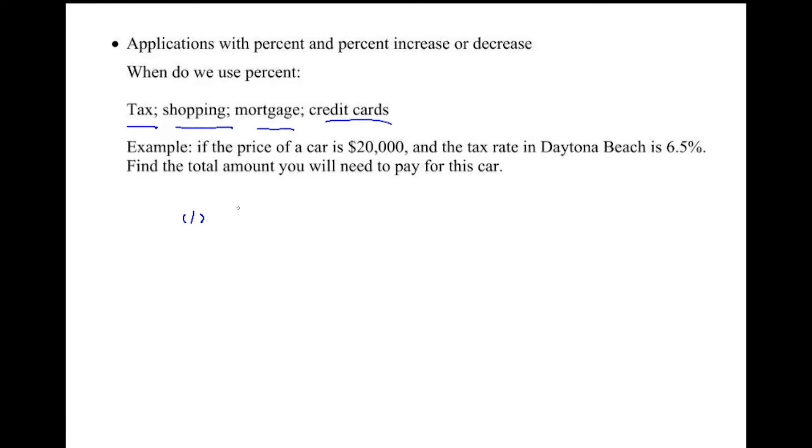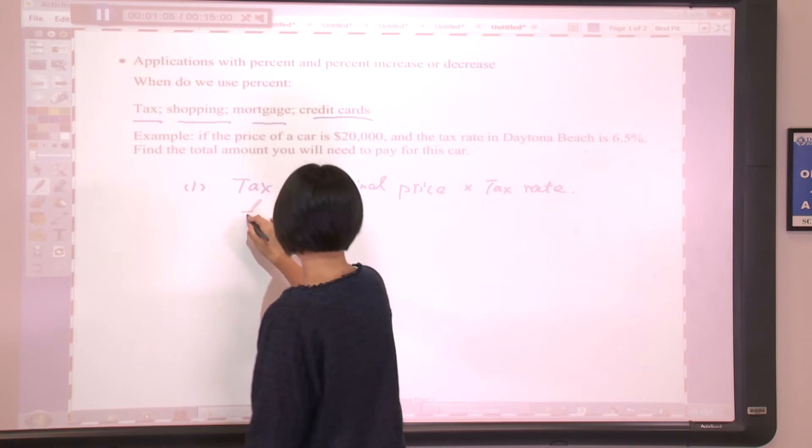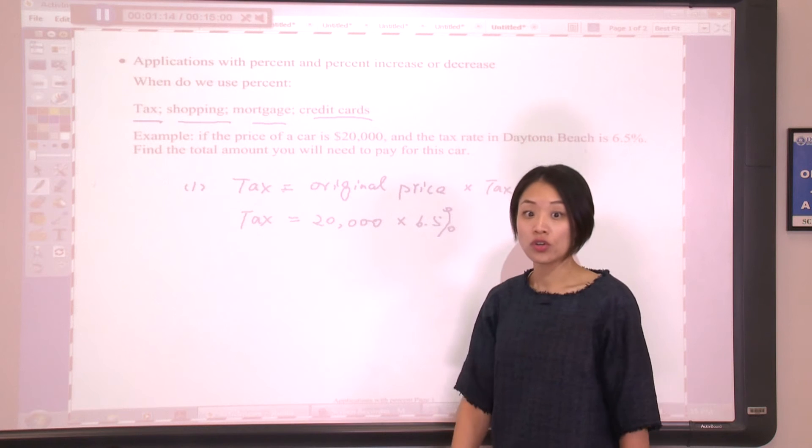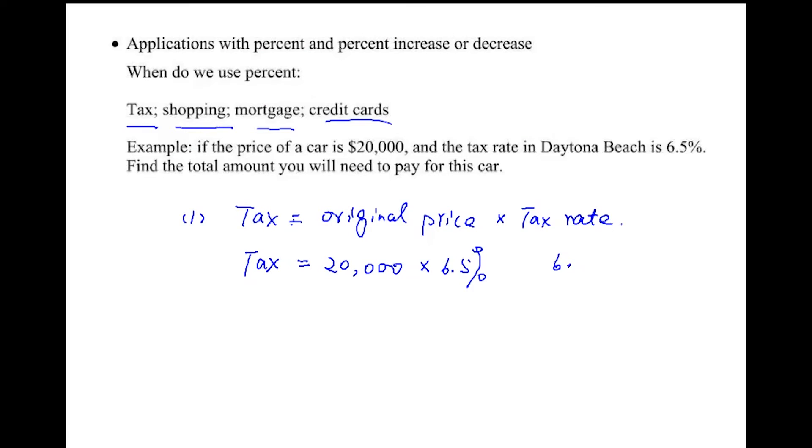First, we need to evaluate the tax. We know tax comes from the original price times the tax rate. In this example, tax is $20,000 times 6.5%. To convert a percent number into decimal, we move the decimal point to the left by two places. So 6.5% equals 0.065. Your tax is going to be $20,000 times 0.065, which will be $1,300.